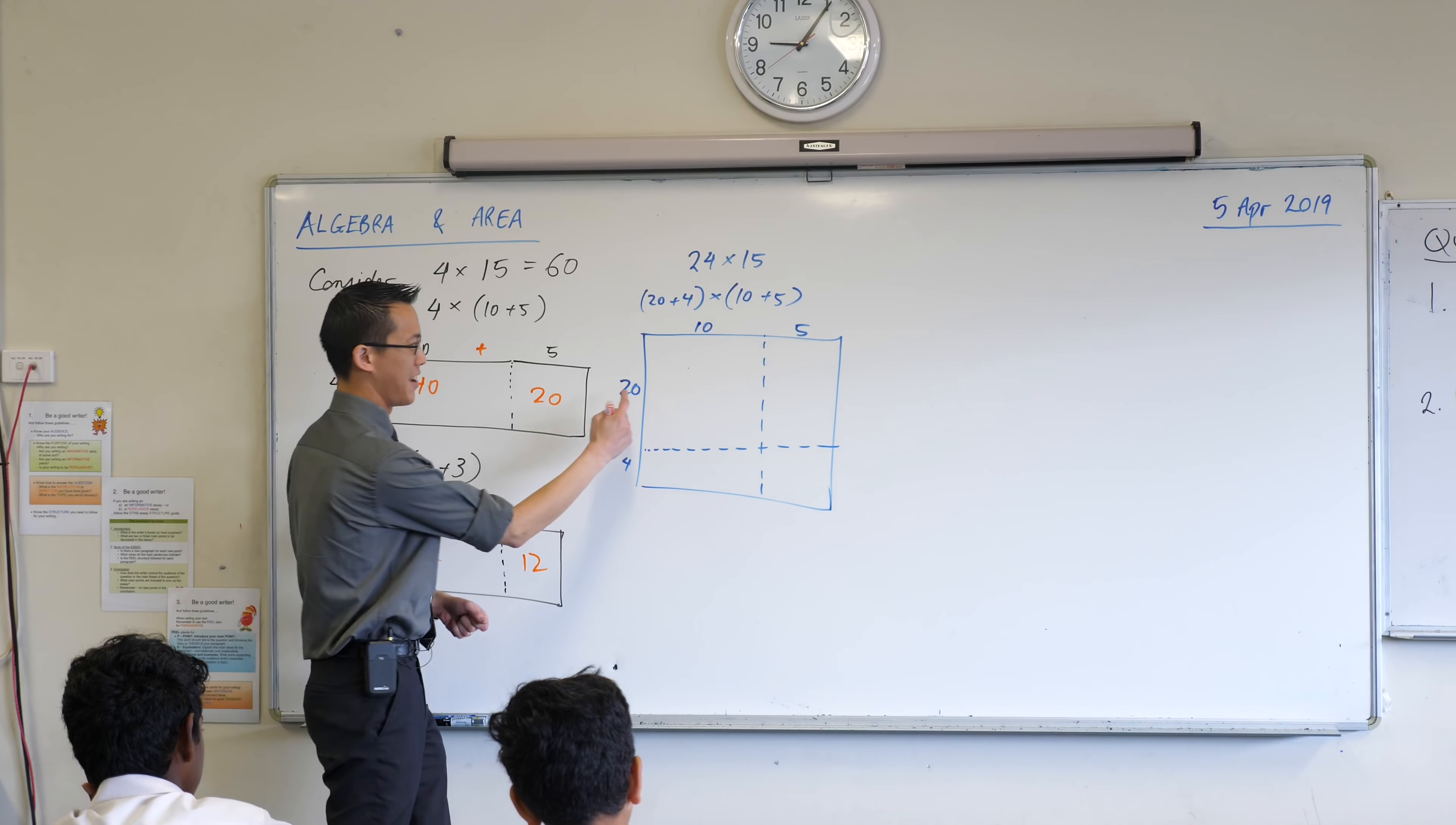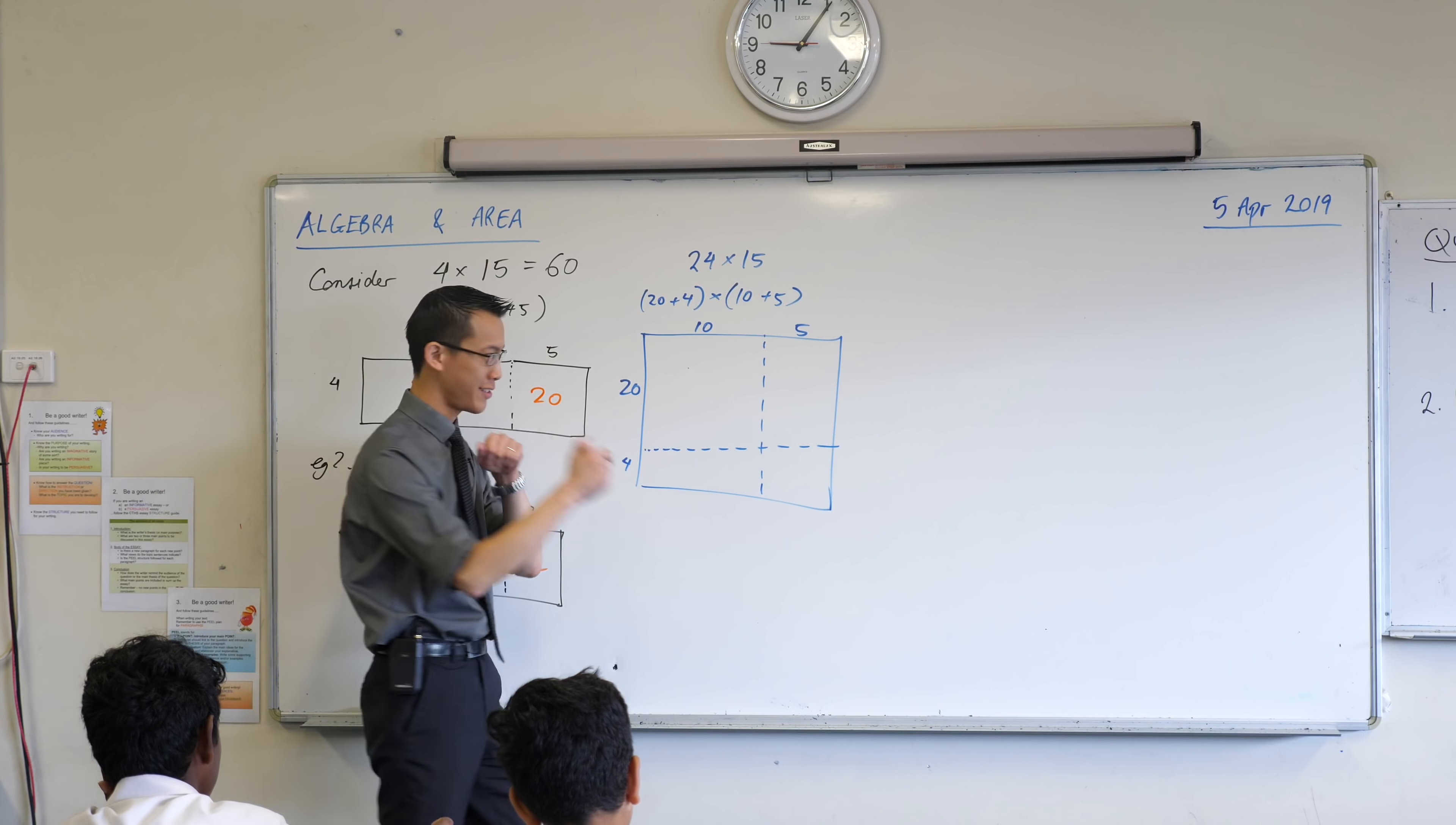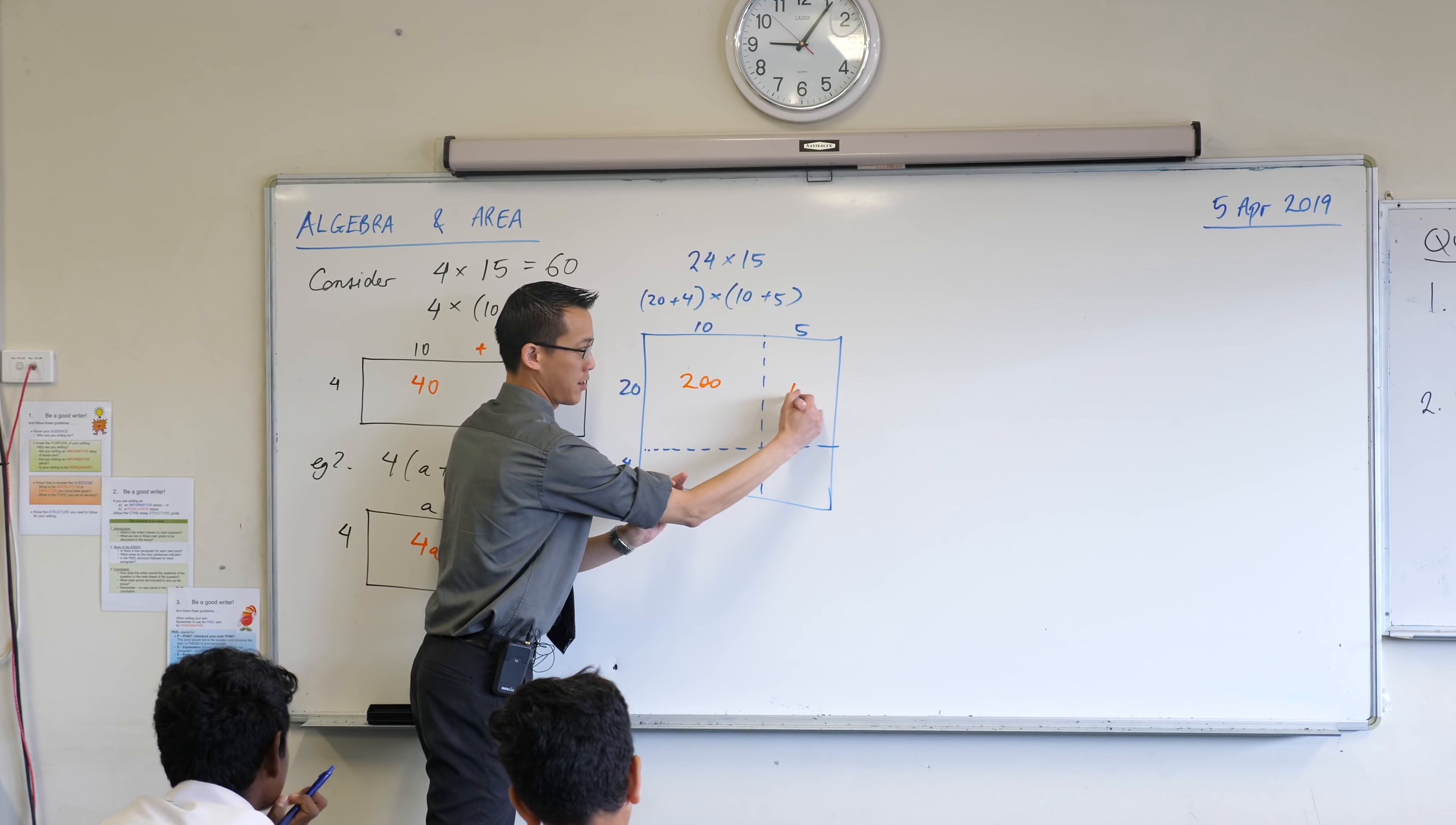I can work out each of those rectangles individually, which is much easier to do than doing the whole thing, 24 lots of 15 together. So, one at a time. 20 times 10. What's this biggest rectangle here? 200? 200. How about 20, there's 20 again, times 5? It's going to be 100.